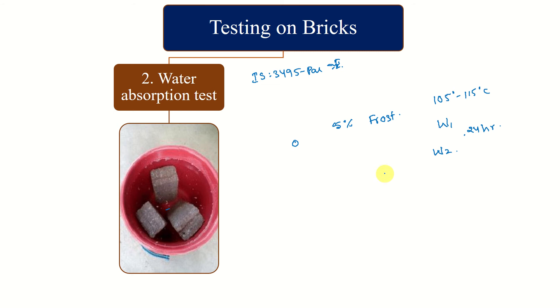Water absorption percentage is measured like this: W2 minus W1 by W1 into 100. That is weight of wet brick minus weight of dry brick divided by weight of dry brick multiplied by 100. The average water absorption shall not be more than 20 percent by weight for class B bricks and 12 to 15 percent by weight for higher class bricks.